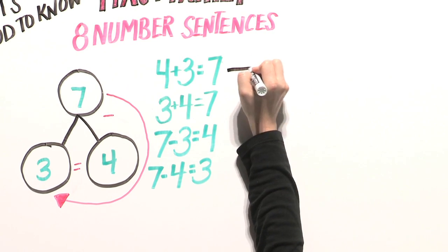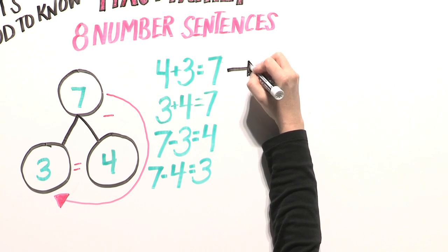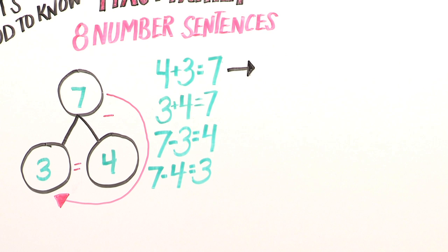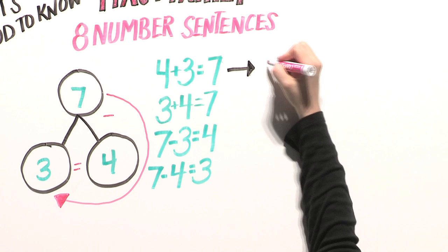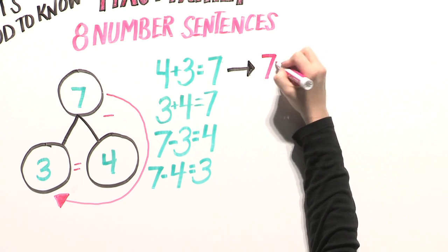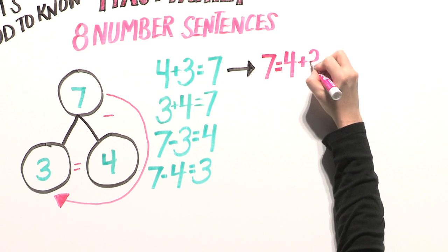these number sentences can be written differently and still be true. Watch this. If we know 4 plus 3 equals 7 is true, then we also know 7 equals 4 plus 3 is true.